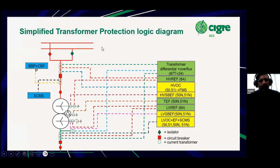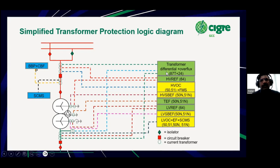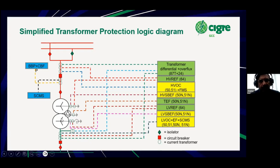This is a simplified transformer protection logic diagram, typically taken from a transmission network. What is key to understanding here is that the location of the CTs determines the zones of protection. For a transformer differential protection, the CT is at the HV top side and the LV side CT is close to the circuit breaker. Whatever fault happens within this zone is protected by the differential protection — it includes not only the transformer but also whatever switchgear or cables are between the HV CT and the LV CT.